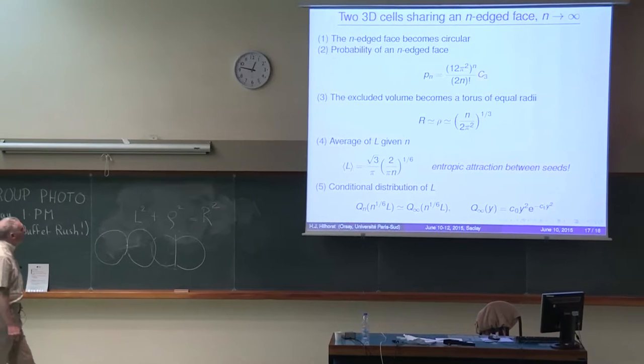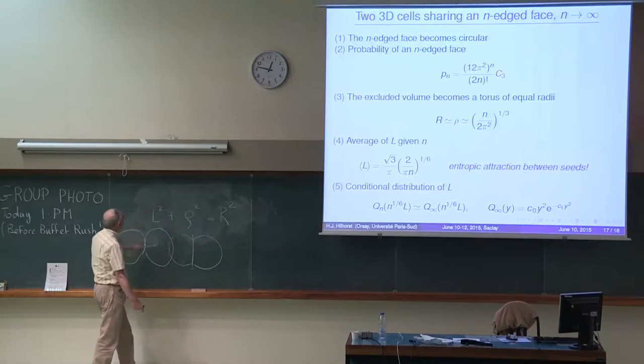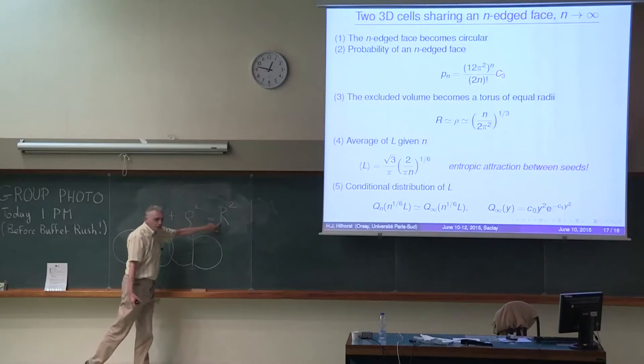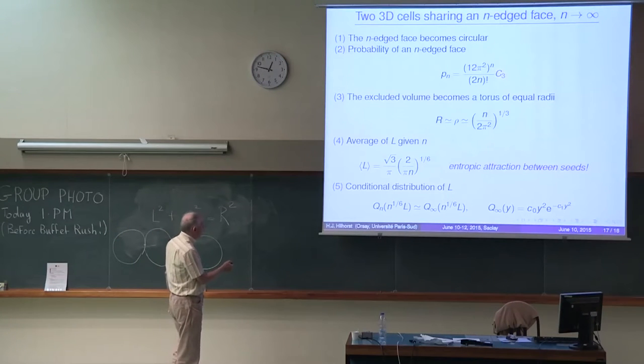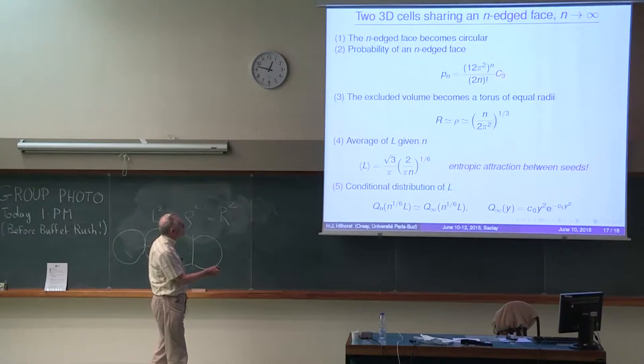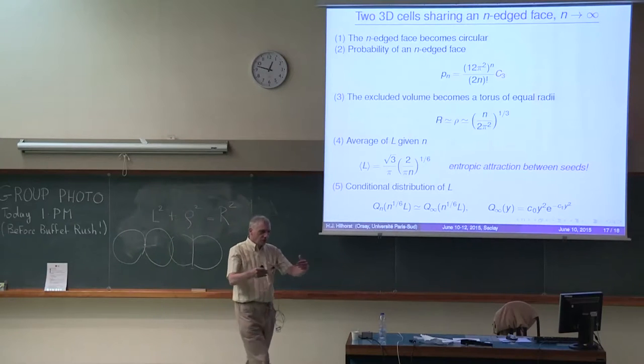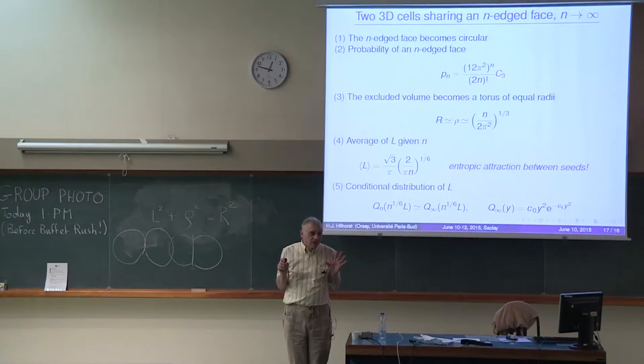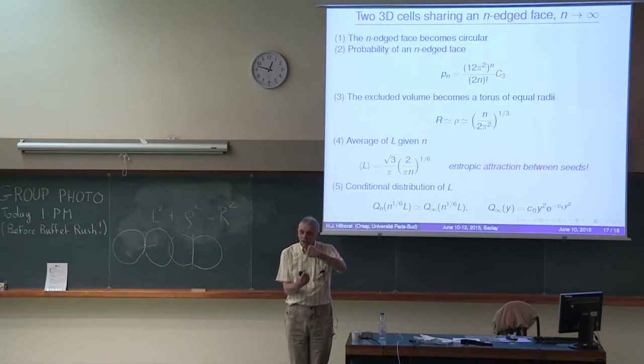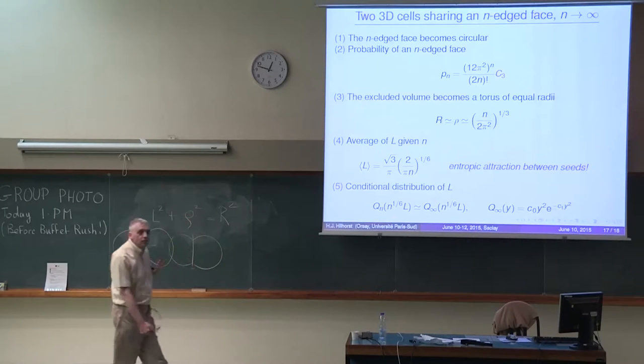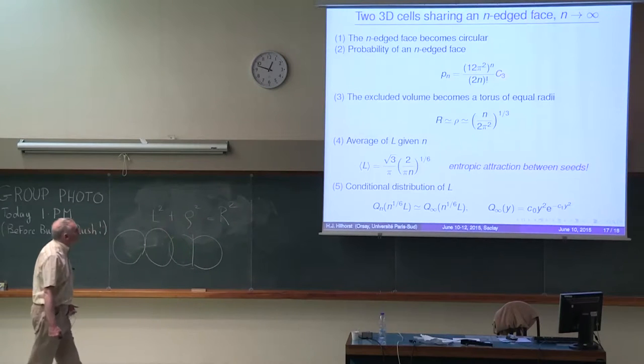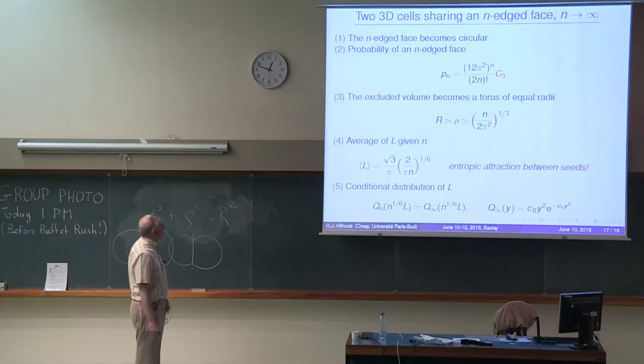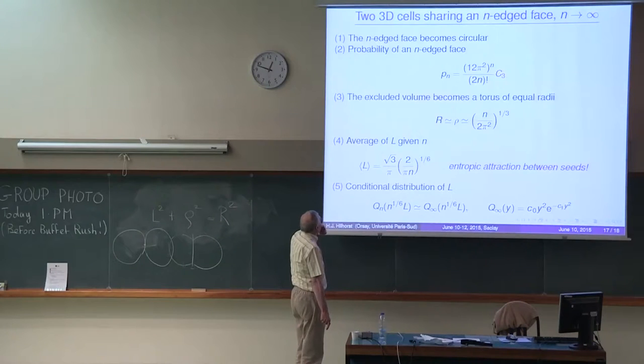Now comes the interesting thing. The average of ℓ, this distance, scales according to a smaller power of n than ρ² and r², that are equal. It turns out that that power is in fact negative, and that the average value of ℓ decreases as n to the minus 1/6 when n goes up. In other words, if you impose on the interface between two cells to be n-edged, that exerts an entropic attraction between the seeds of the two cells involved. These seeds will preferentially be pushed together, in complete agreement with what Emanuel Lazar found in his simulations. And that is probably the most interesting part of the results that I found. Finally, we found an entropic attraction between the seeds, and we could make this a bit more precise.